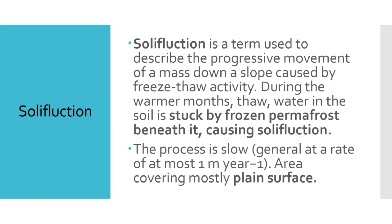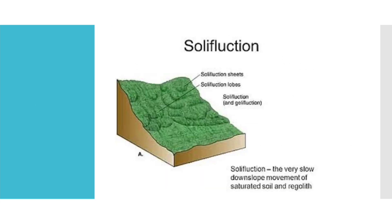The general rate of Solifluxion is 1 meter per year, which is a very low rate from the upper part of the mountainous region, moving from top to bottom. The area mostly covers the plain surface.